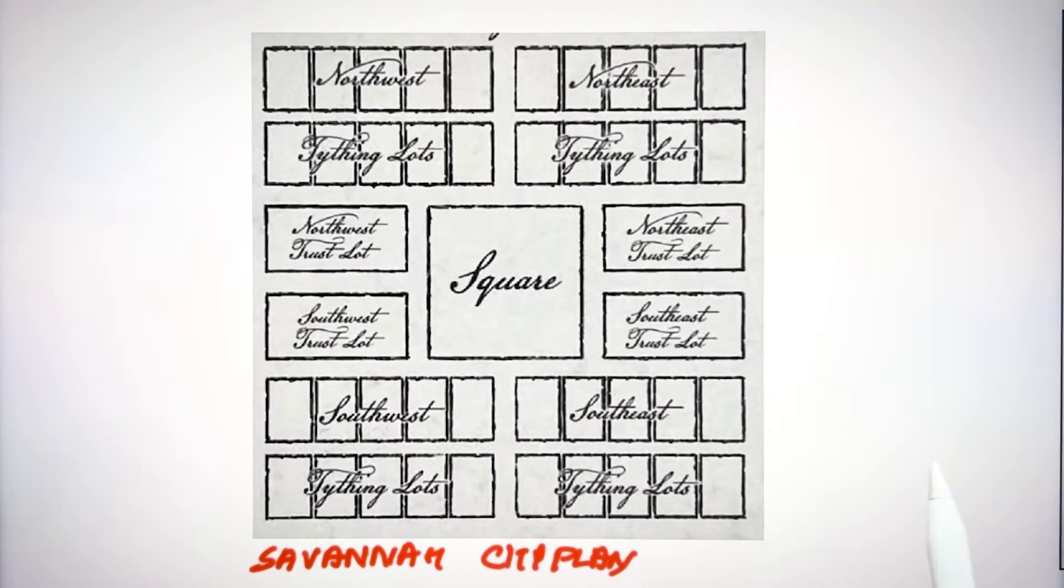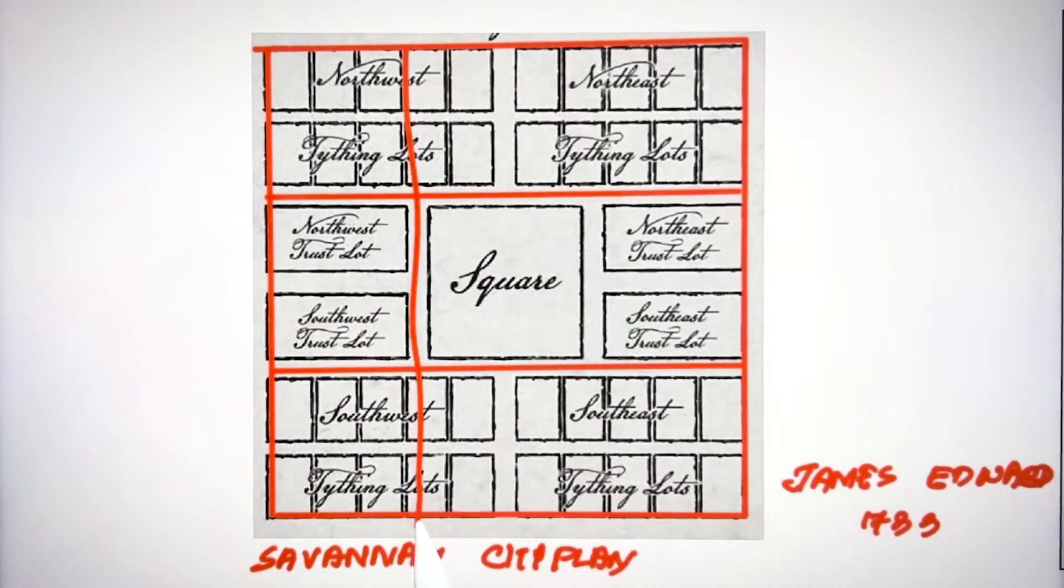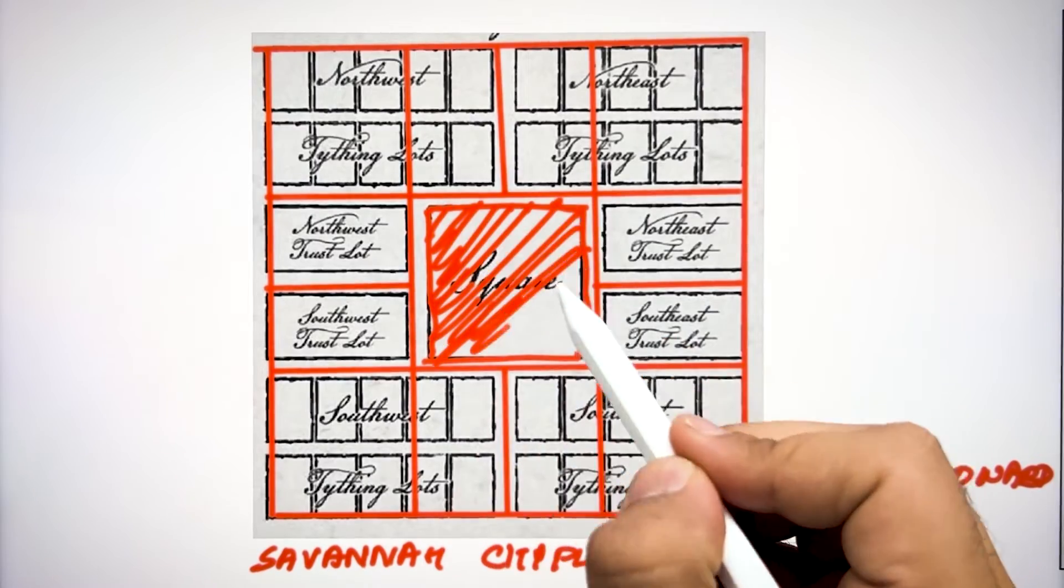Savannah city plan designed by James Oglethorpe in 1733 also follows the principle of nine grid with the major axis connecting one block of the city with the other part of the city.